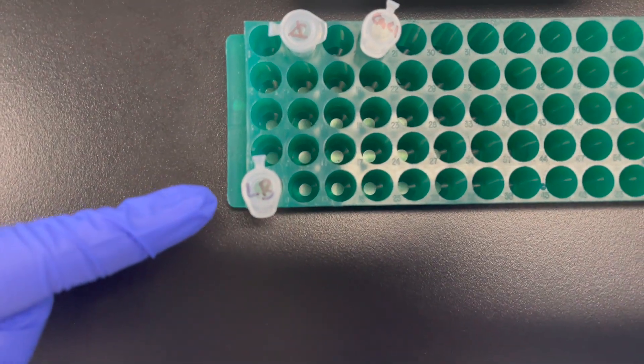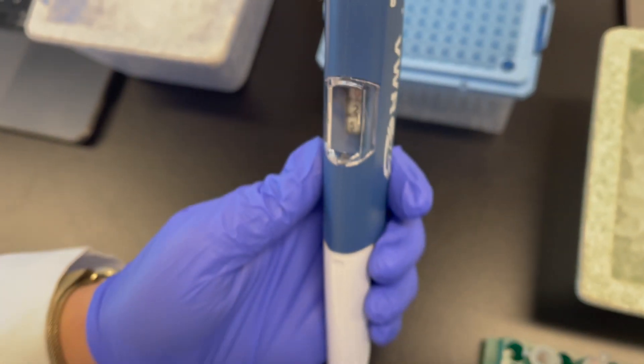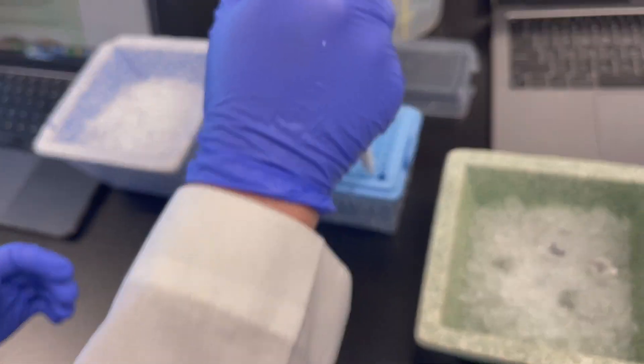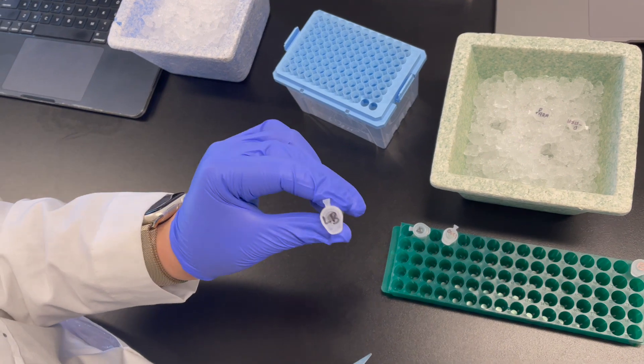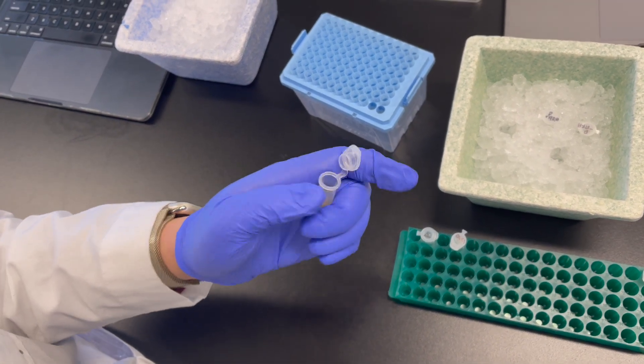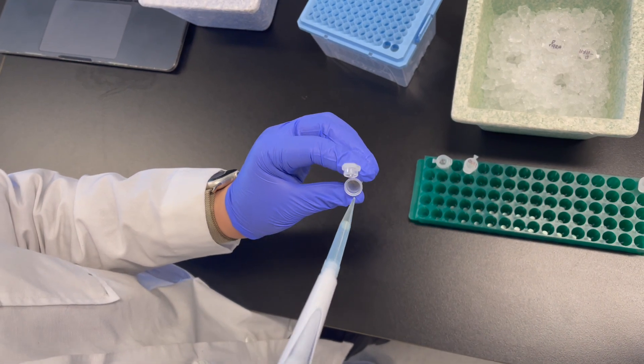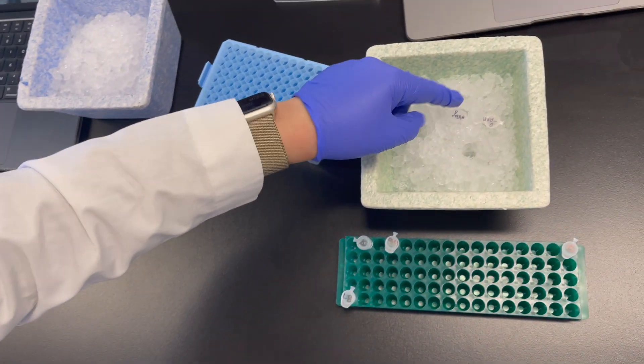Now we'll be adding the LB broth to all of the tubes. Set a P1000 micropipette to 250 microliters. Add 250 microliters of LB to all four of the tubes that should be placed in ice.